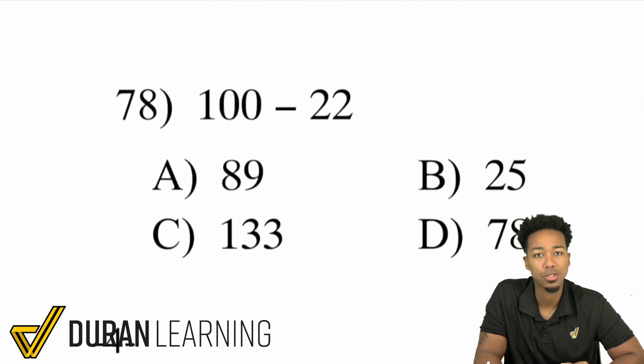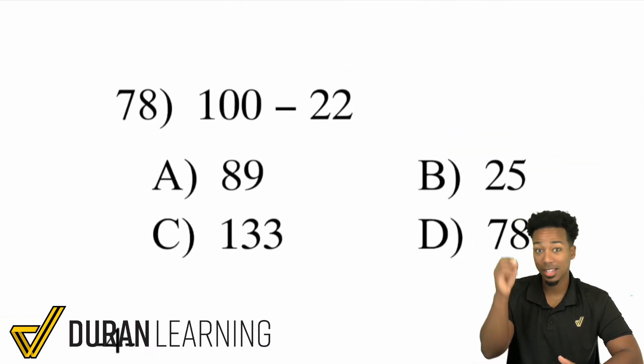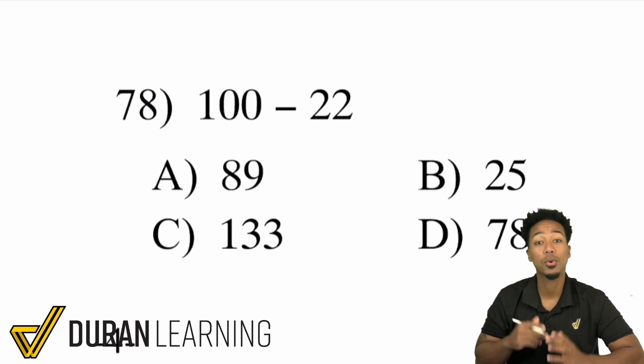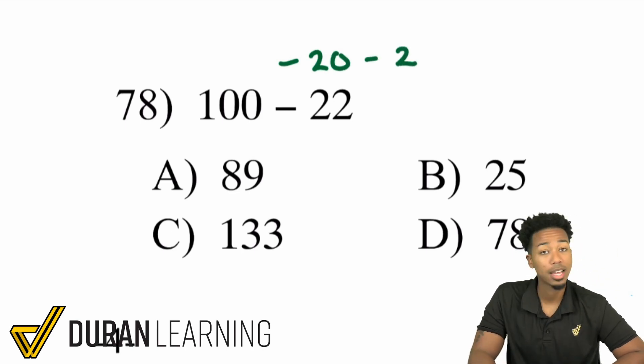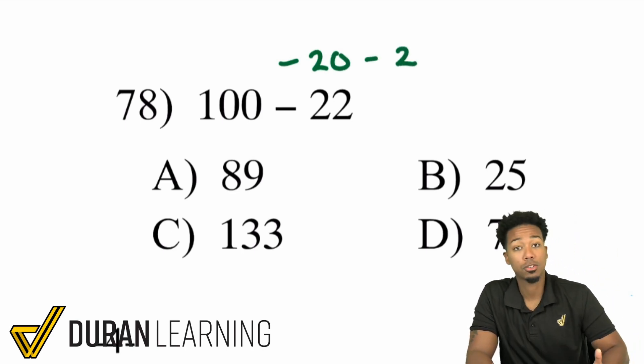Taking a look at 100 minus 22 you don't have to set it up and then keep borrowing ones. That's going to take way too long. You can go ahead and just simply say hey I'll subtract 20 and then subtract 2. Nice and easy. So 100 minus 20 is 80. 80 minus 2 is 78.